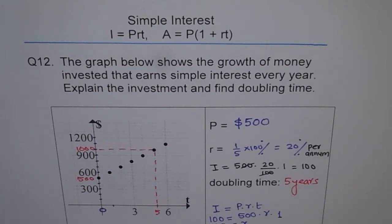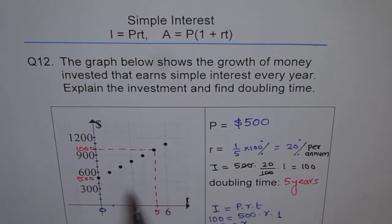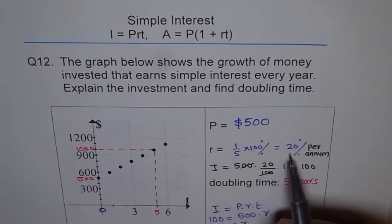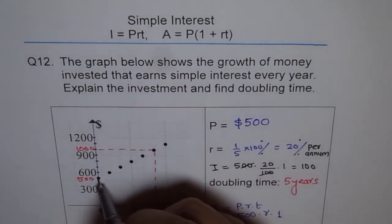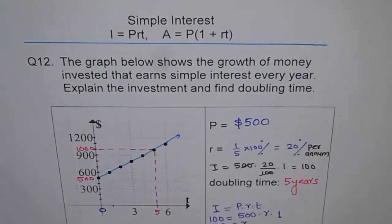In a simple interest problem the relation is linear — if you connect the points it will be a straight line. The reason the graph appears as steps rather than a continuous line is that interest is being paid back only at the end of each year, so the amount increases in discrete jumps.